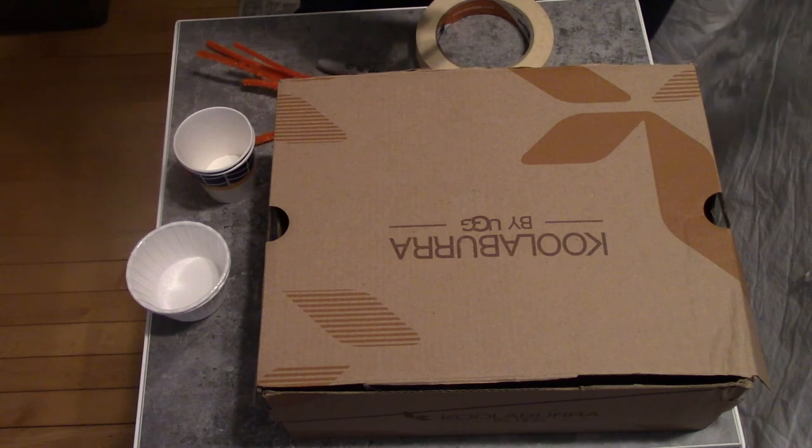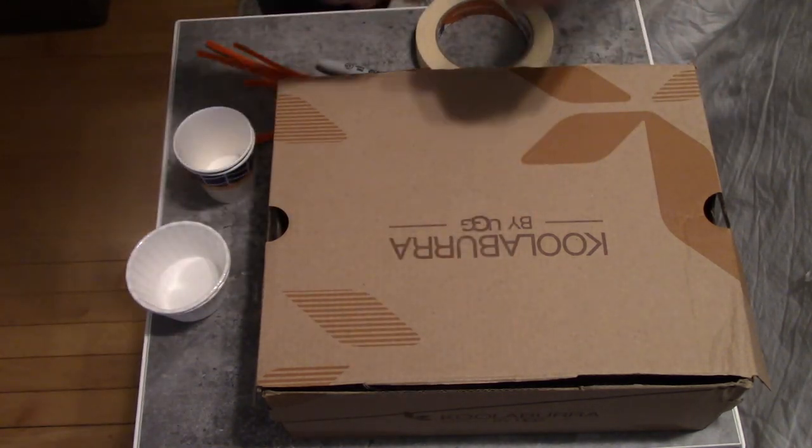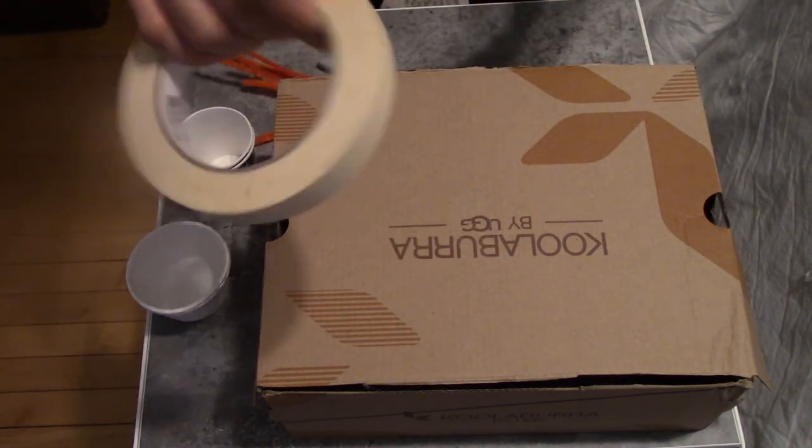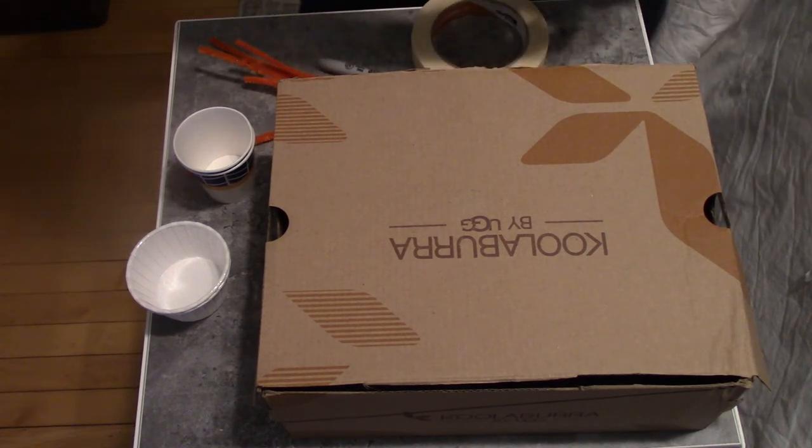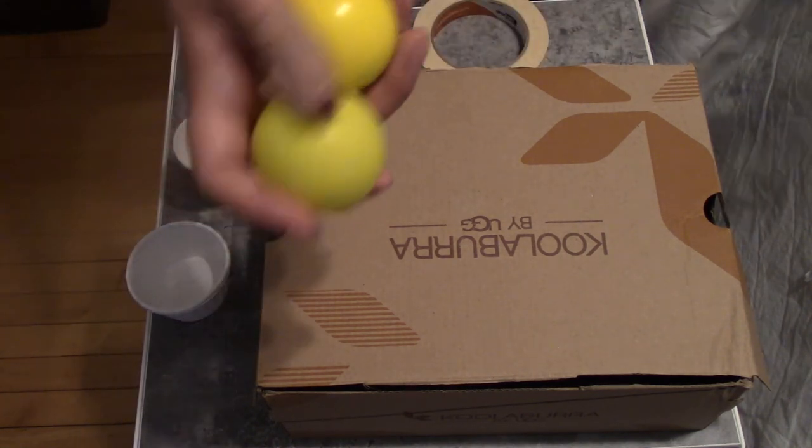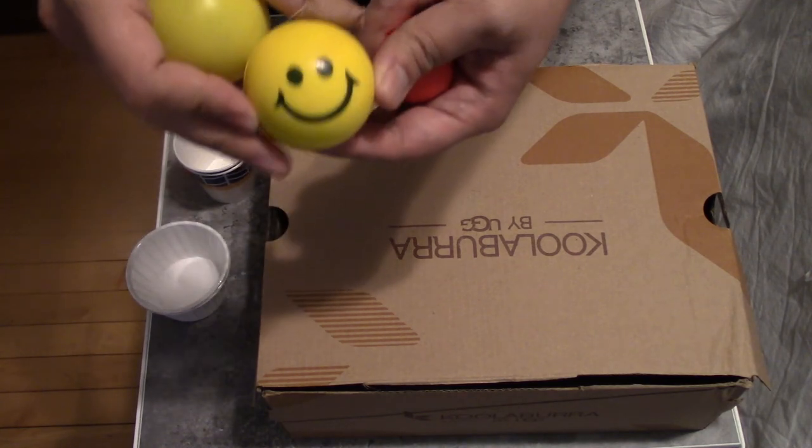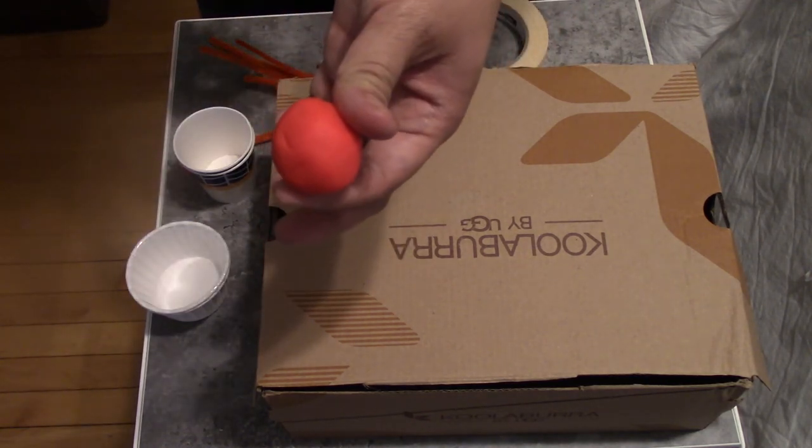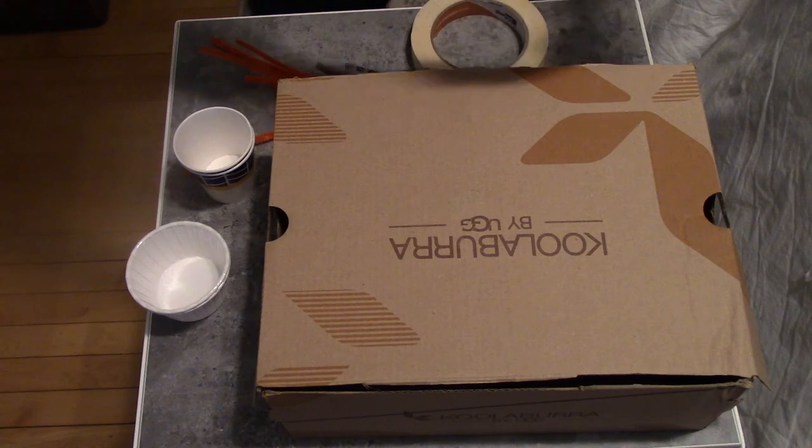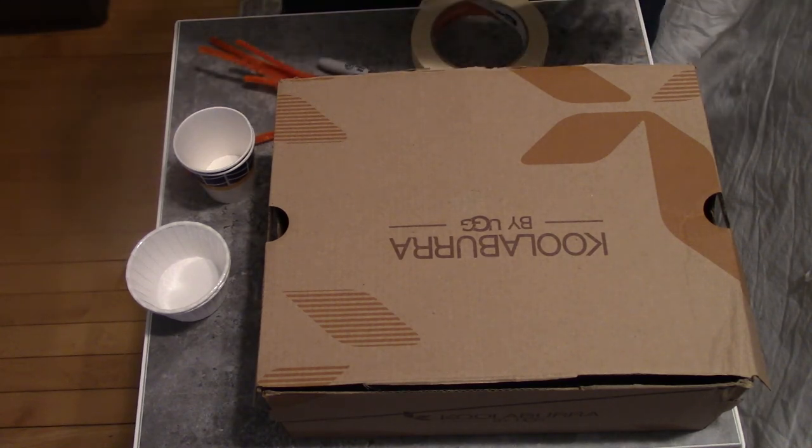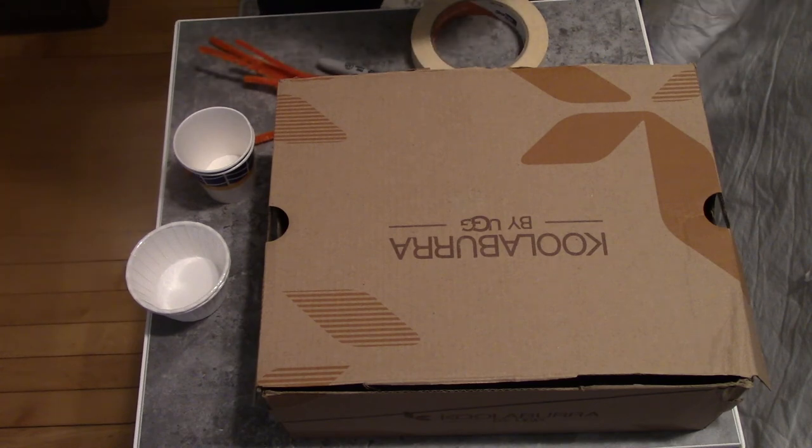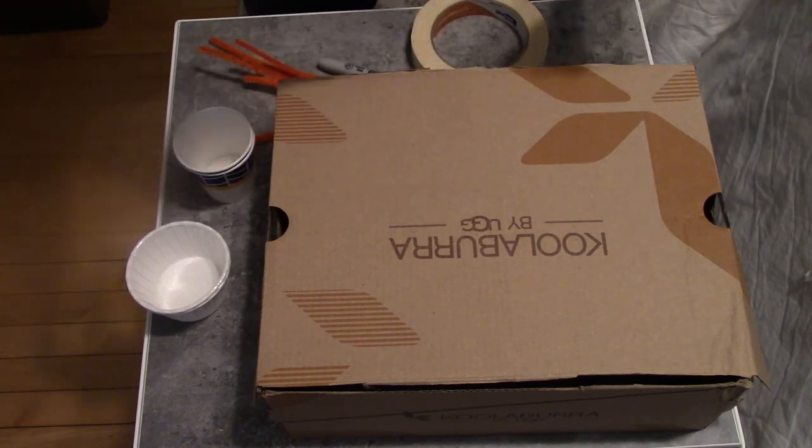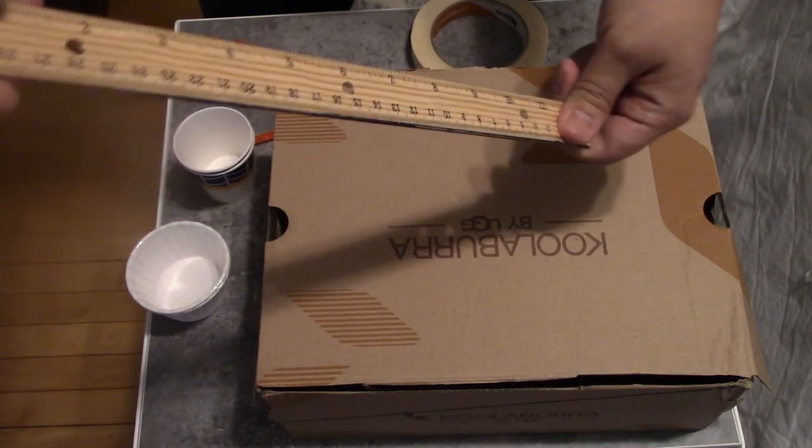And then hot glue if you have hot glue. If not then you can always use tape and you're going to need a projectile, so a ball. If you don't have a ball you can use clay to make a ball. You can use paper to make a ball or you can use marbles. And last but not least to help you draw straight lines you'll need a ruler.